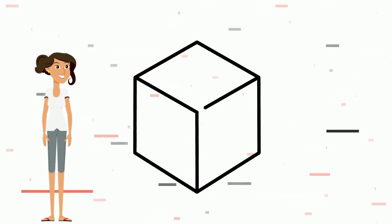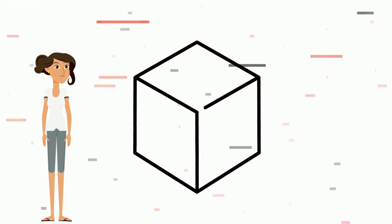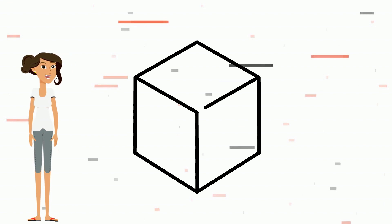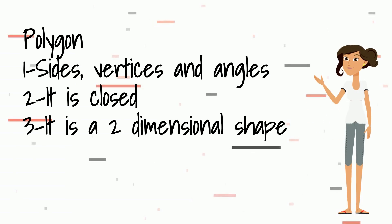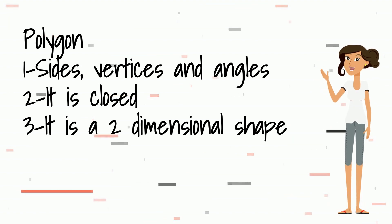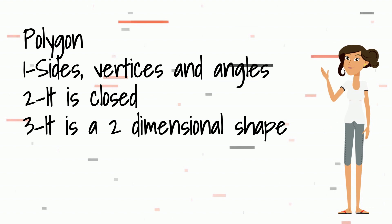For example, have a look at this cube, which is made of squares, and squares are polygons because they have sides, vertices, and angles — they are closed and they are two-dimensional shapes. To sum it all up, a shape is called a polygon if it has sides, vertices, and angles, it is closed, and it is a two-dimensional shape.